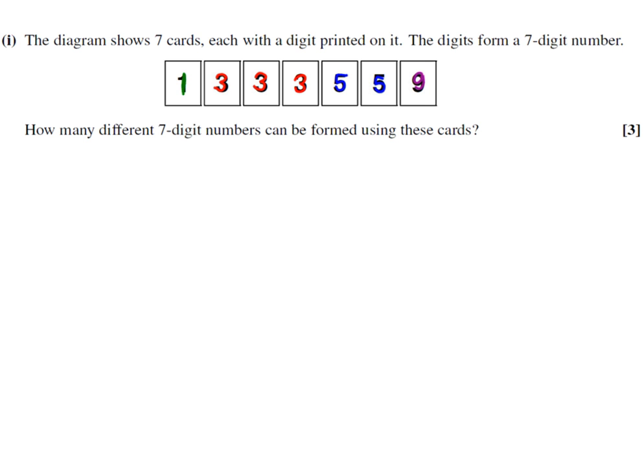The diagram shows seven cards, each with digits printed on. The digits form a seven-digit number. How many different seven-digit numbers can be formed? We need to think about arranging these cards. The seven cards, so in total, there are seven factorial ways to arrange seven cards.